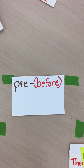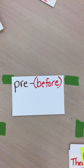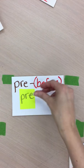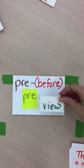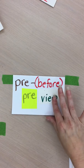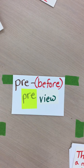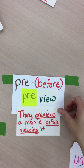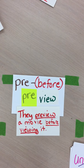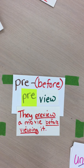Last we have the prefix pre. Pre means before. If we add the prefix pre to the word view, we have the word preview. What do you think the word preview means? They preview a movie before viewing it.